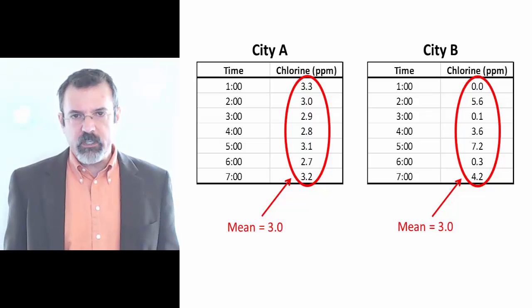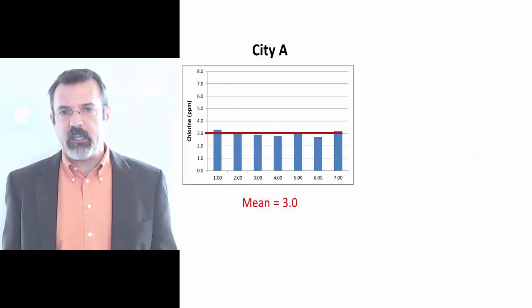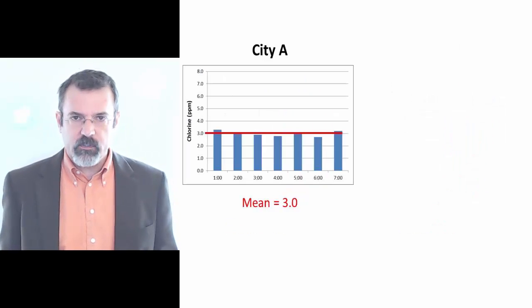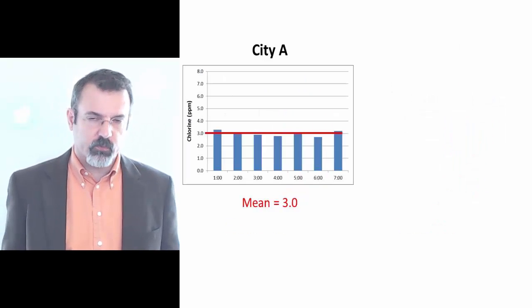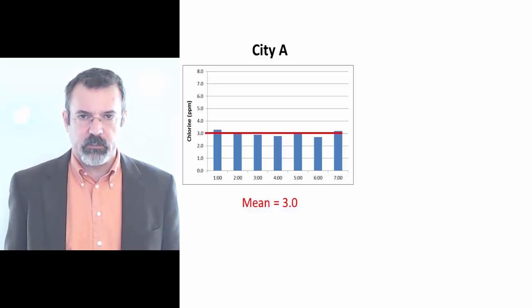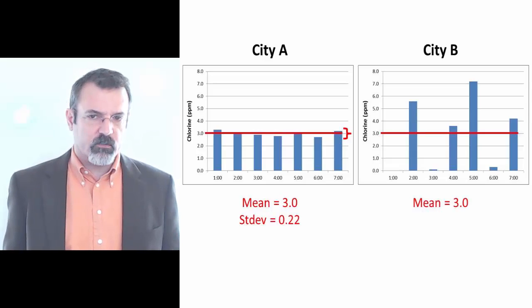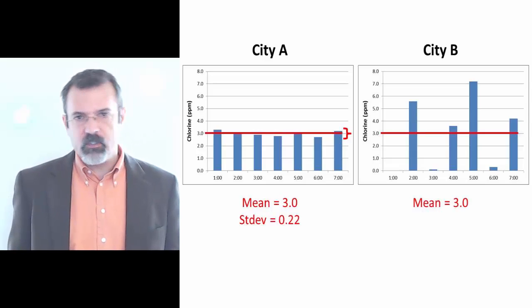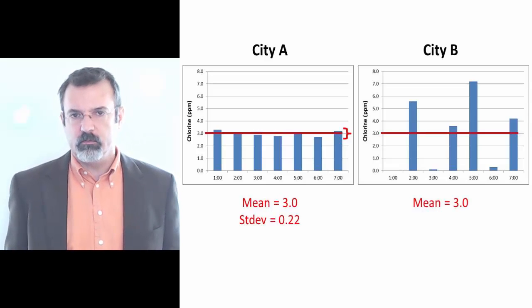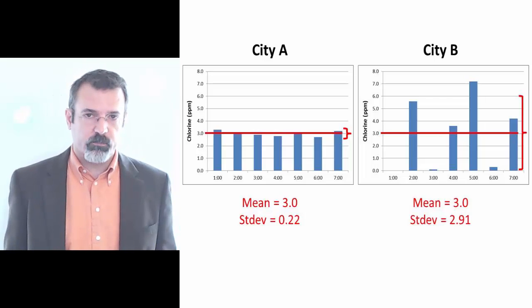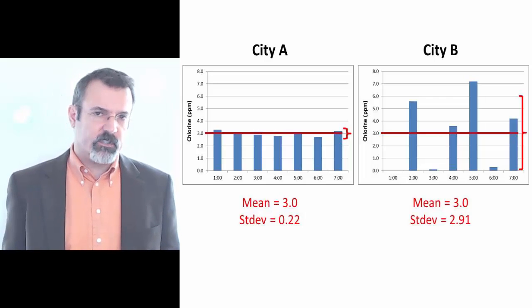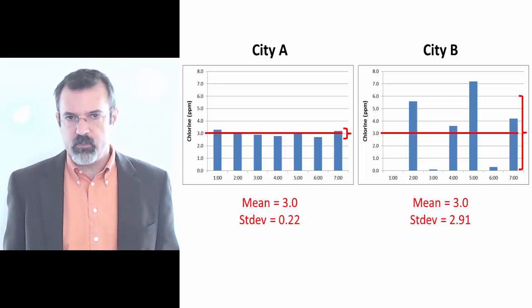When we look at the readings for city A, we notice that the average chlorine is three parts per million, but the standard deviation is 0.22. Meanwhile, in city B, the average is also three parts per million, but the standard deviation is 2.91.